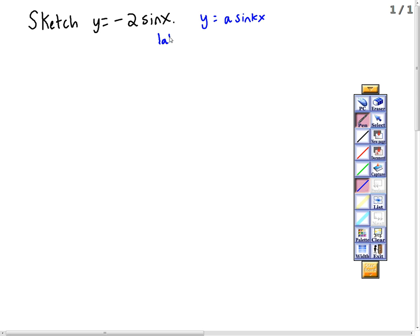So here, absolute value of a, which is the amplitude, is equal to the absolute value of negative 2, which is 2.